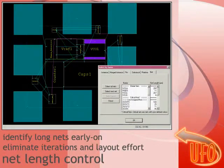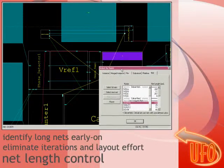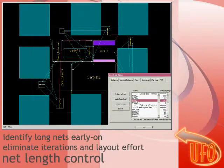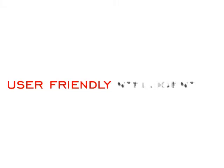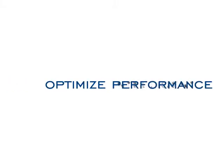Long nets can be automatically identified during floor planning and layout. This allows preventive measures to be applied early on to minimize unnecessary iterations.